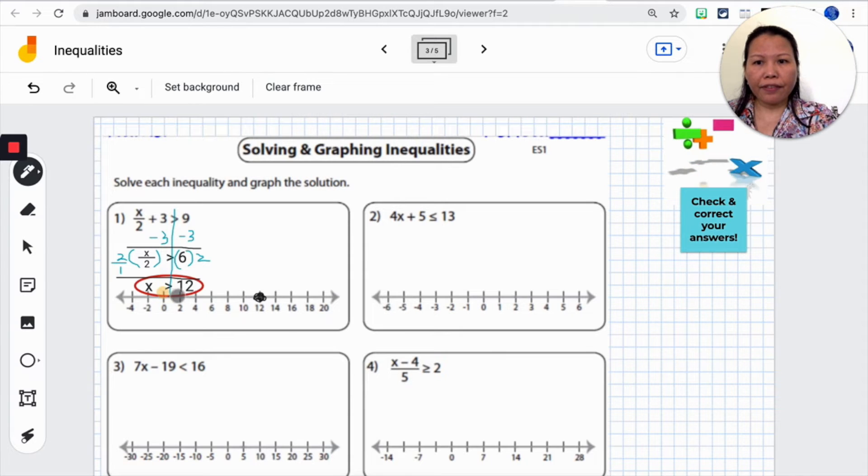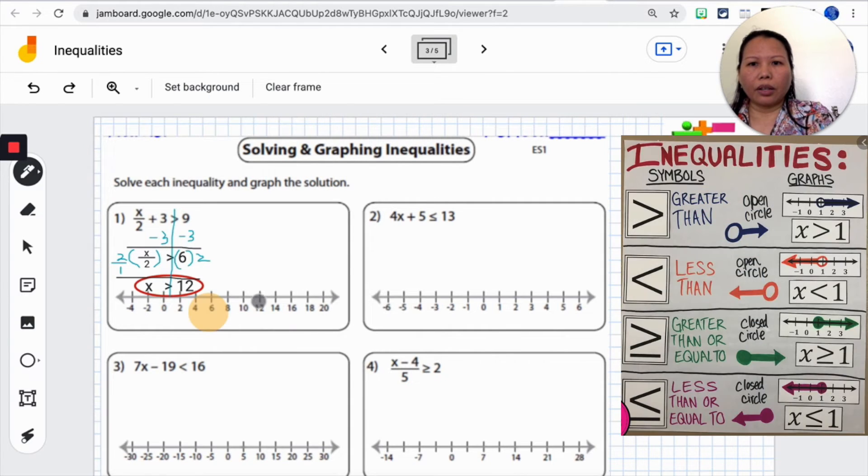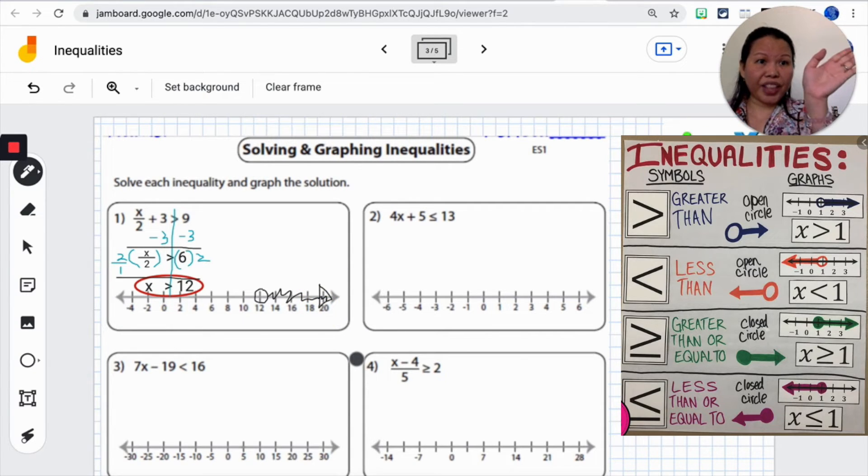Let's say if I have a little dash under here, I would make it a solid dot. But I don't have the dash under or I don't have the equal in the equations. Then it's an open dot on the 12. And we are going to say that it's greater than 12. So 13, 14, 15. It's going to the right and shade everything to the right. You can make it shading in with a pencil or you can make it a squiggly line like that with the arrow pointing to the right. This is the way that you are going to graph for number 1.